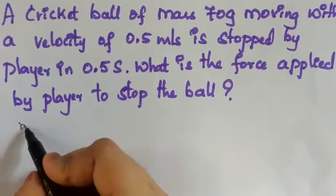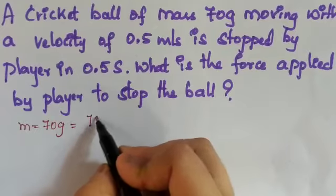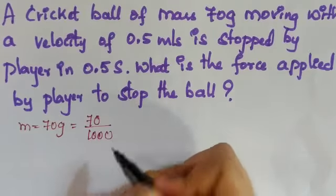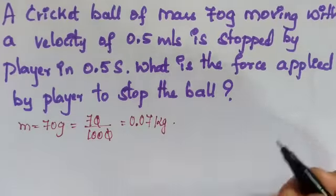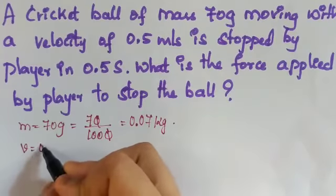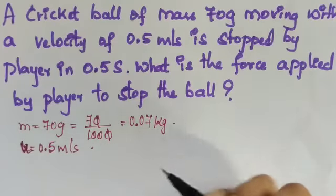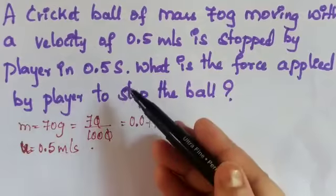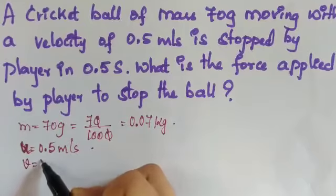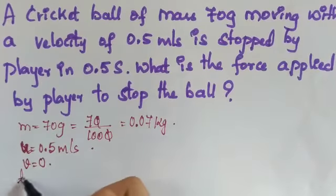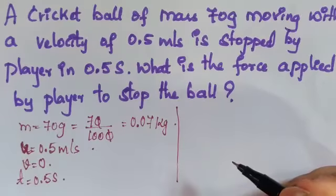Mass is given as 70 gram. Converting to kg: 70 divided by 1000 gives 0.07 kg. Velocity is given as 0.5 meter per second — this is the initial velocity U. The player has stopped the ball, so final velocity V becomes 0. Time given is 0.5 seconds. We have to find the force applied by the player.